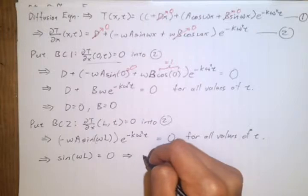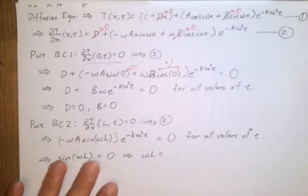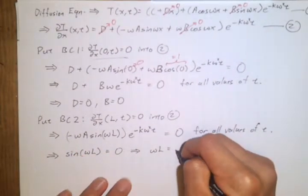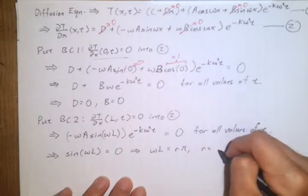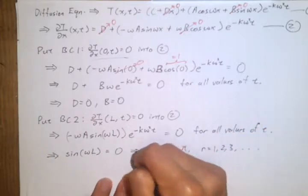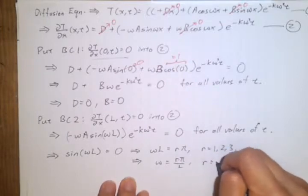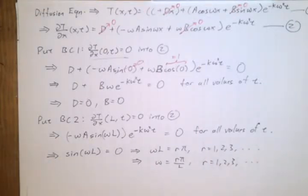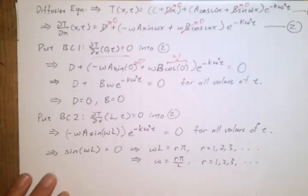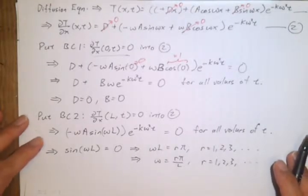This means omega L must be a multiple of pi, so omega L equals r pi, where r equals 1, 2, 3, and so on. This means that omega equals r pi over L. Now I'm ready to put these values of omega back into my solution.